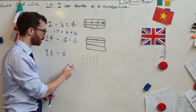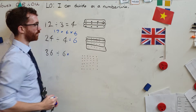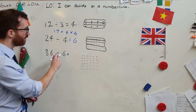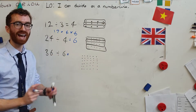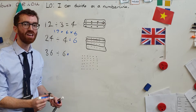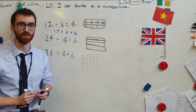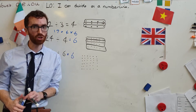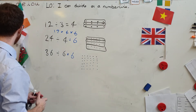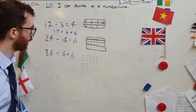So 36 divided by six. Instead of shading all of these, I'm just going to think to myself: six times what is 36? How many sixes in 36? Well, there are six sixes in 36. Check that you've got those answers all right, and if you did, we're going to move on a little bit now.